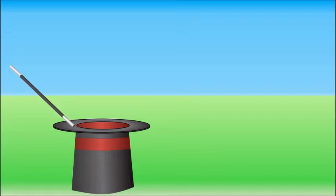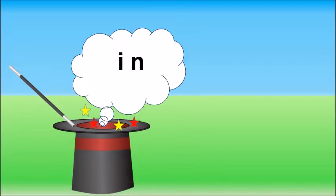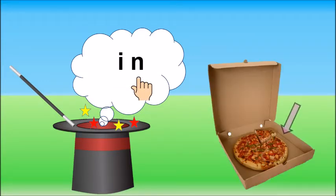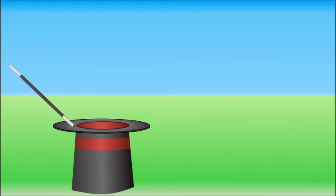Abracadabra gilly gilly choo, children read it. I N, in. Look at this arrow, this arrow is pointing to the pizza which is in a box. A pizza is in a box.